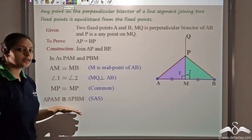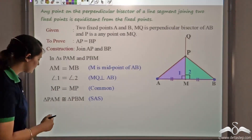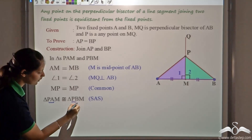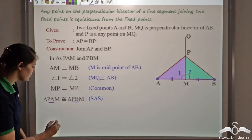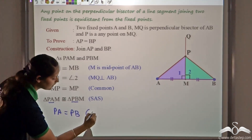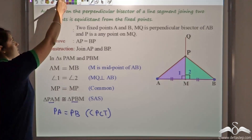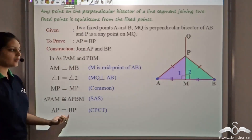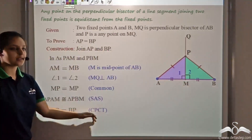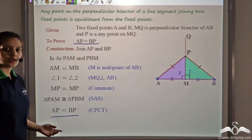Since these triangles are congruent, the corresponding parts of the triangles are also congruent. So PA would be equal to PB by CPCT — corresponding parts of congruent triangles. So AP is equal to BP, which is exactly what I wanted to prove. I am done with the proof here.